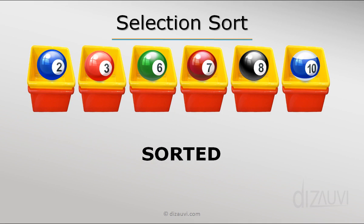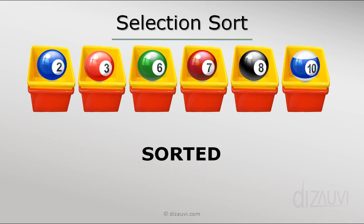until all the balls are sorted. So it is called the selection sort algorithm because every time we select the smallest number and then swap it with the item in the relevant bin.